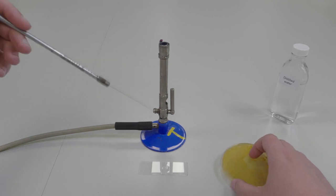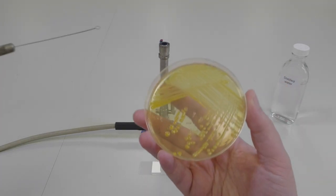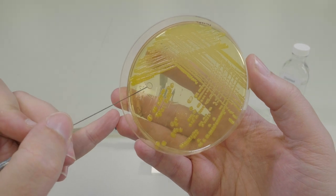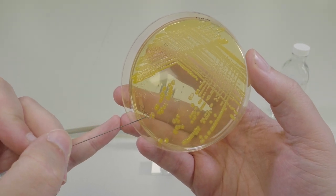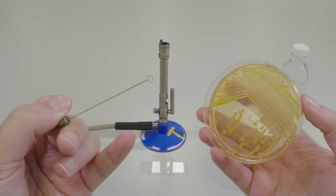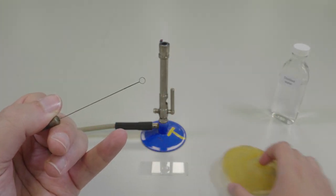Next pick up the plate containing your bacterial culture and holding the inoculating loop like a pencil, pick off a small quantity of bacteria from a single colony. Please note you do not need to take a lot of bacteria from your plate.